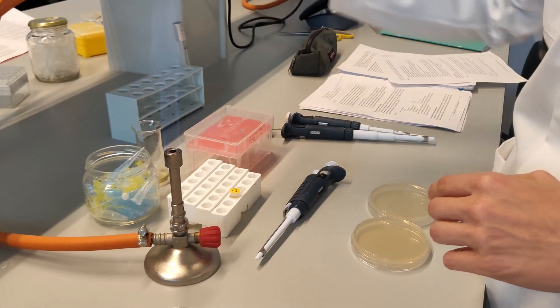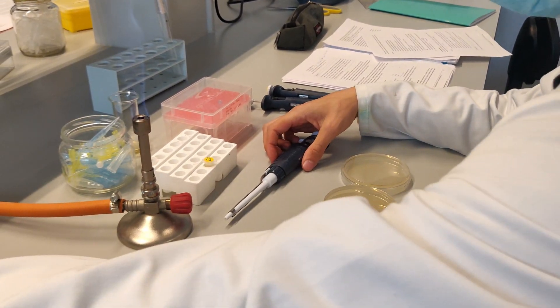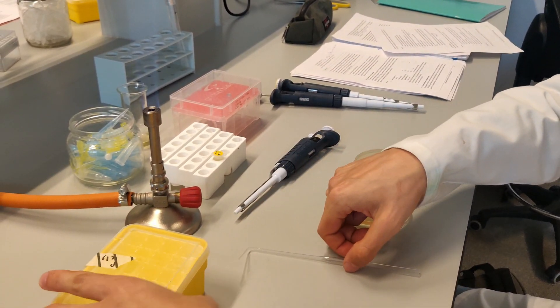Plate 100 microliters out on LB plates with selection markers so only these colonies will grow on the plates.